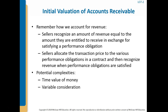One potential complexity relates to time value of money. Because credit sales allow a customer to get goods now but pay later, you can view a credit sale as also providing a loan. Sellers can ignore this financing component when it's not significant — typically when receivables are due in less than a year. For longer-term receivables, the financing component is more significant and must be accounted for. Another complexity relates to variable consideration — contracts can allow cash discounts as well as sales returns and allowances.